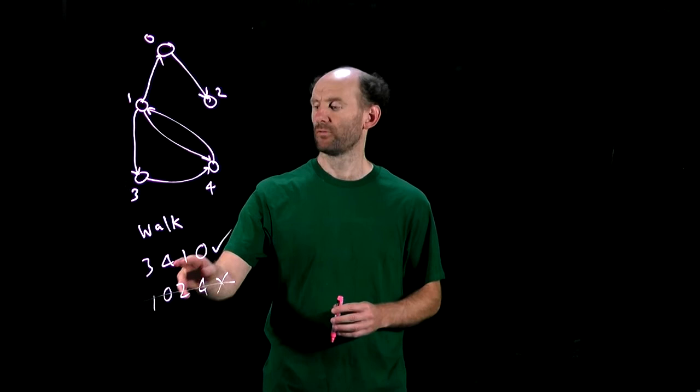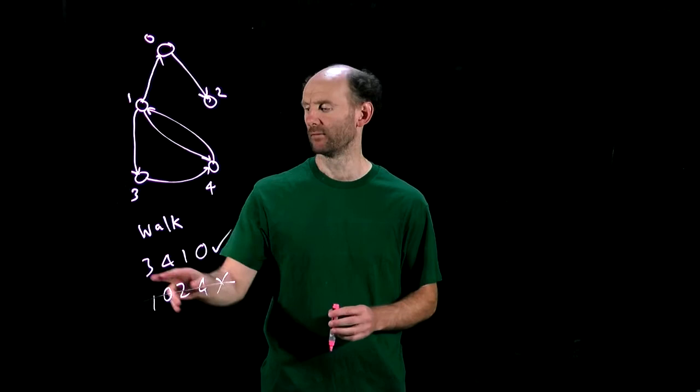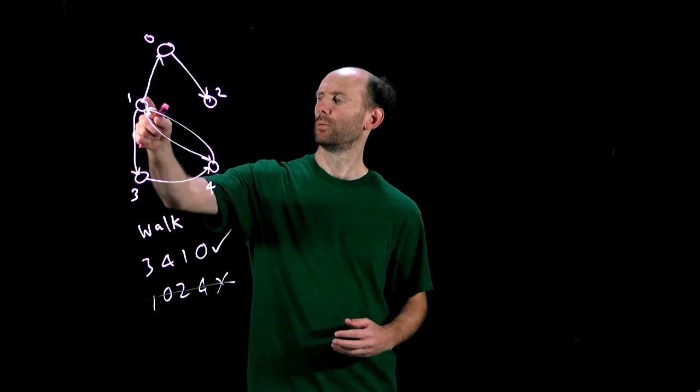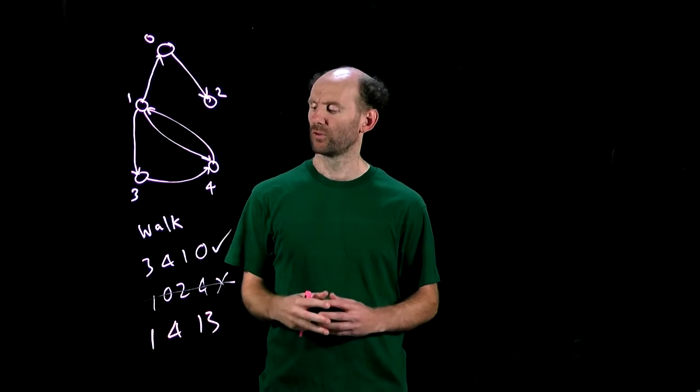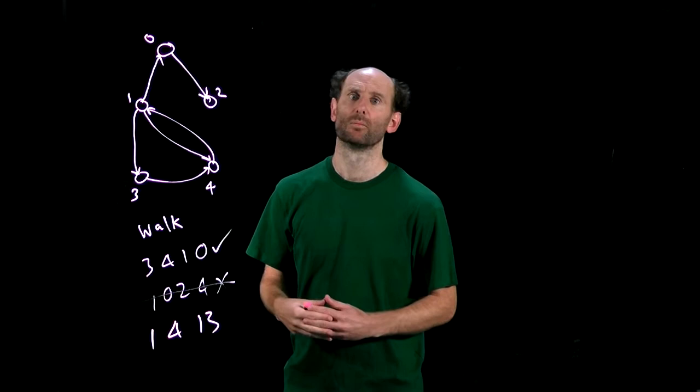So 3, 4, 1, 0 is a walk of length 3 and it's also a path as no nodes are repeated. The walk 1, 4, 1, 3 is a walk but it's not a path as the node 1 is repeated. Even the single node 3 is a walk and path of length 0.